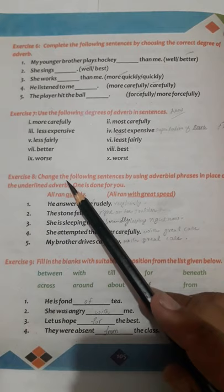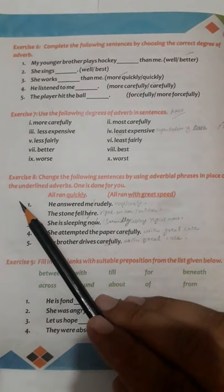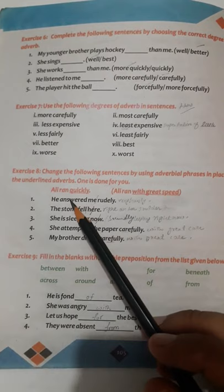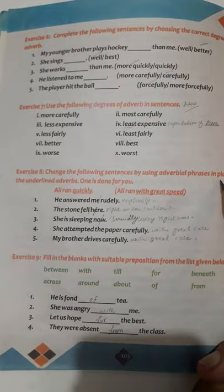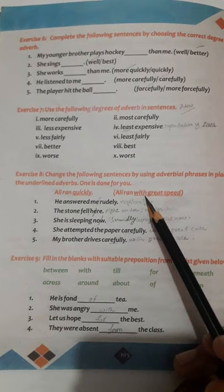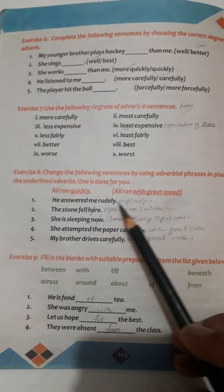Exercise number eight: change the following sentences by using an adverbial phrase in place of the underlined adverb. One is done for you. 'All run quickly' becomes 'All run with great speed.' 'With great speed' is the adverbial phrase.